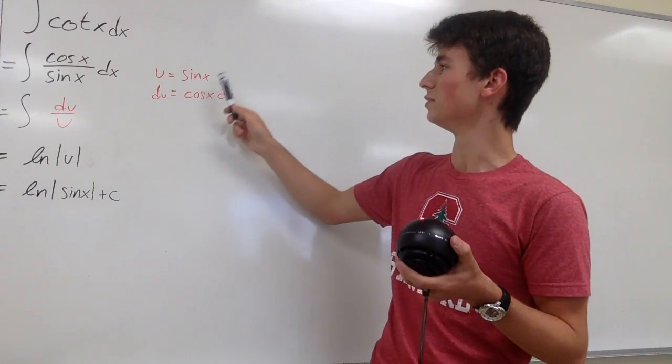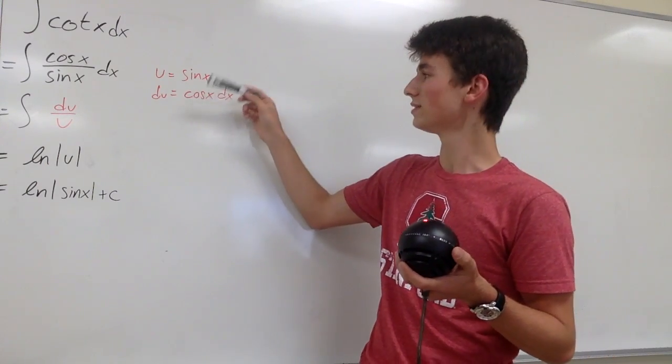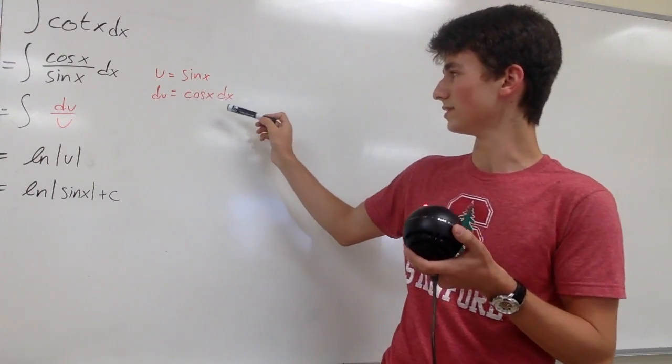Then we can use a u-substitution where u equals sine of x. And then we differentiate once to get du equals cosine x dx.